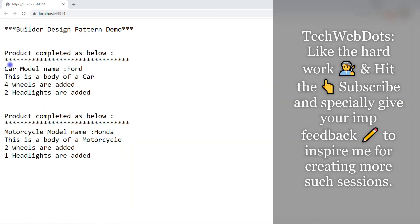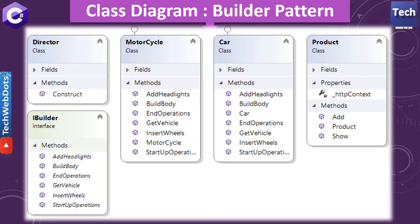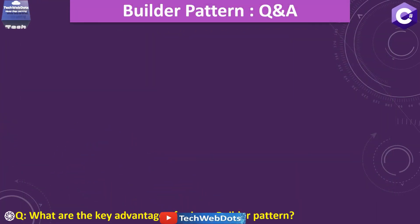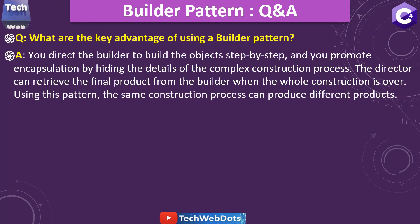The output is as expected. For the car: 'Product completed as car, model name Ford. This is a body of a car. Four wheels are added. Two headlights are added.' For the motorcycle: 'Product completed as motorcycle, model name Honda. This is a body of a motorcycle. Two wheels are added. One headlight is added.' The key advantages are: you build objects step by step, promote encapsulation by hiding complex construction details, and the same construction process can produce different products — as we saw for car and motorcycle.